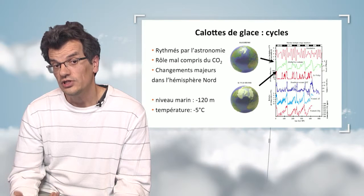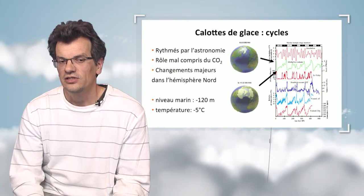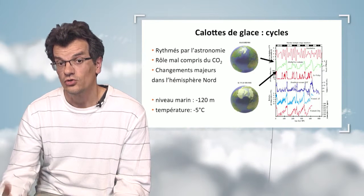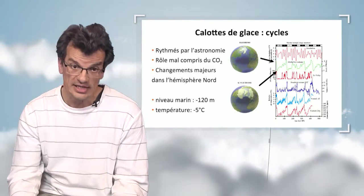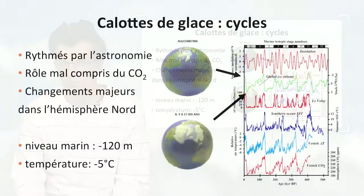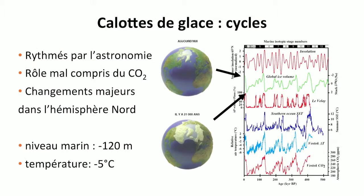There have been glacial and interglacial period cycles. The most recent alternating phase was some 20,000 years ago, and we are now going through an interglacial period. These cycles are interesting because in the history of science, they demonstrate that climate changes over time. In the 19th century, when this was discovered, scientists started asking questions about the way the climatic system worked. The underlying mechanisms are still not really understood.